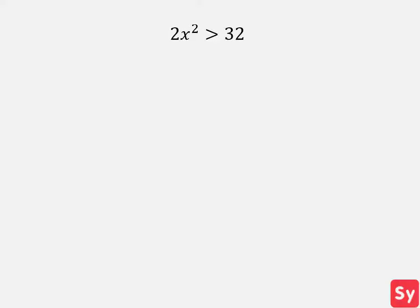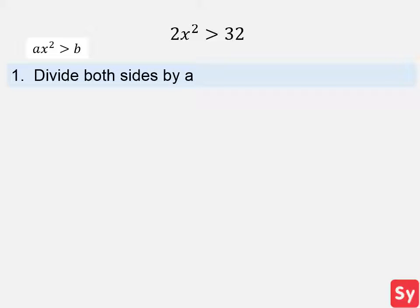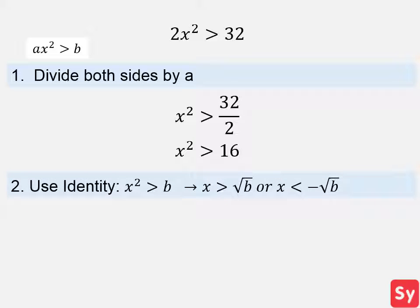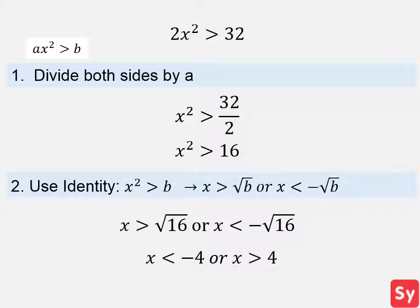First example: we have 2x² is greater than 32. Since the inequality is in the form ax² is greater than b, we follow the steps specific to this inequality. First, divide both sides by a — so we divide both sides by 2. We simplify and get x² is greater than 16. Next, we use this identity: x is greater than the square root of 16, or x is less than the negative square root of 16. We simplify and get x is less than negative 4, or x is greater than 4, which is our answer.